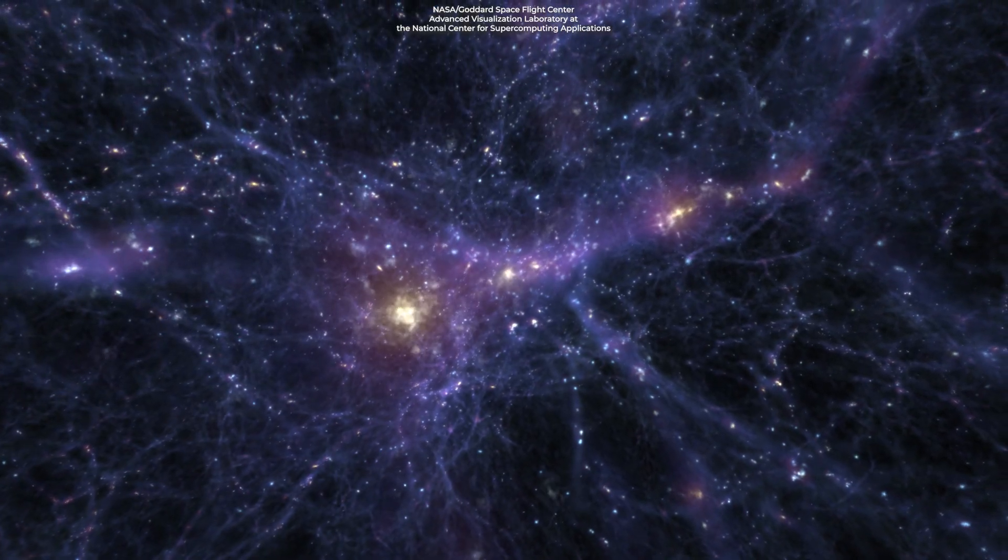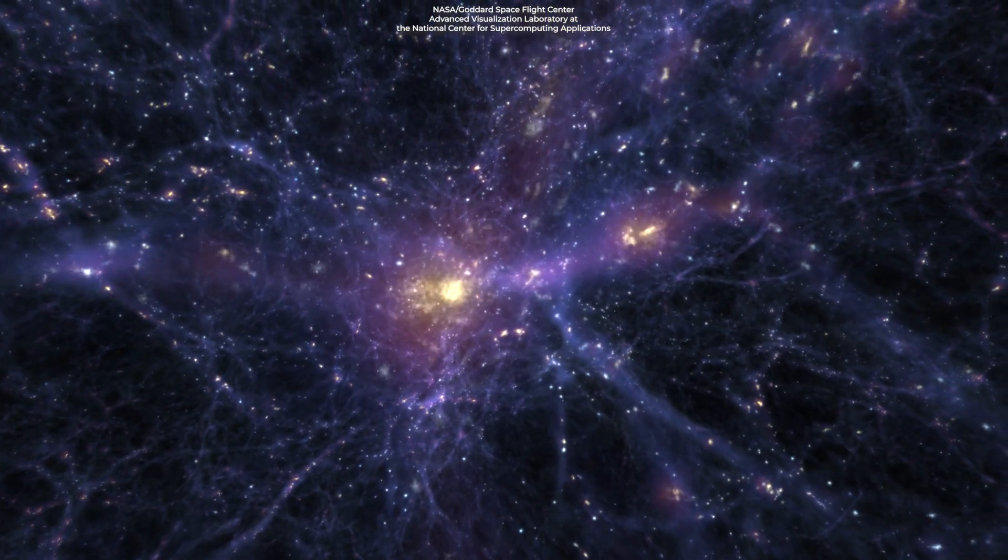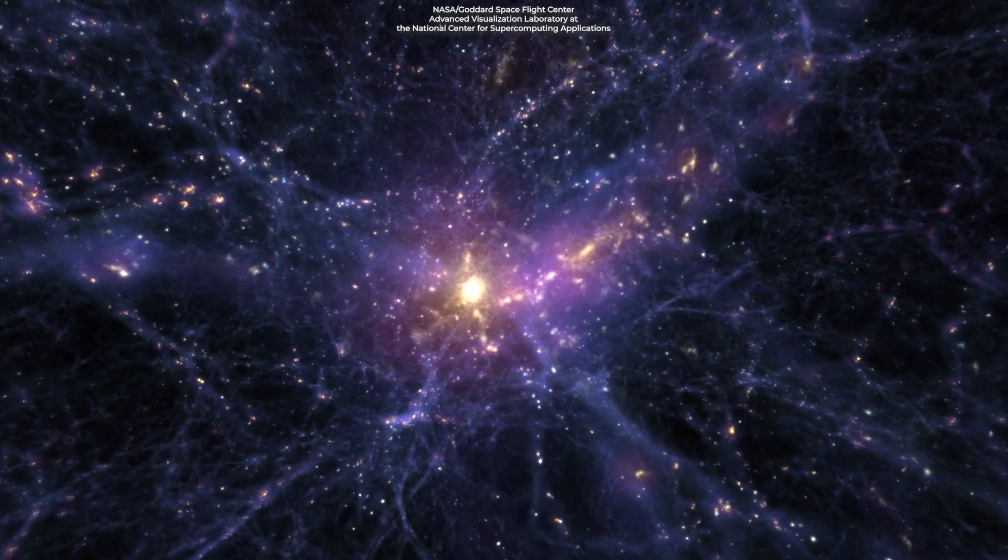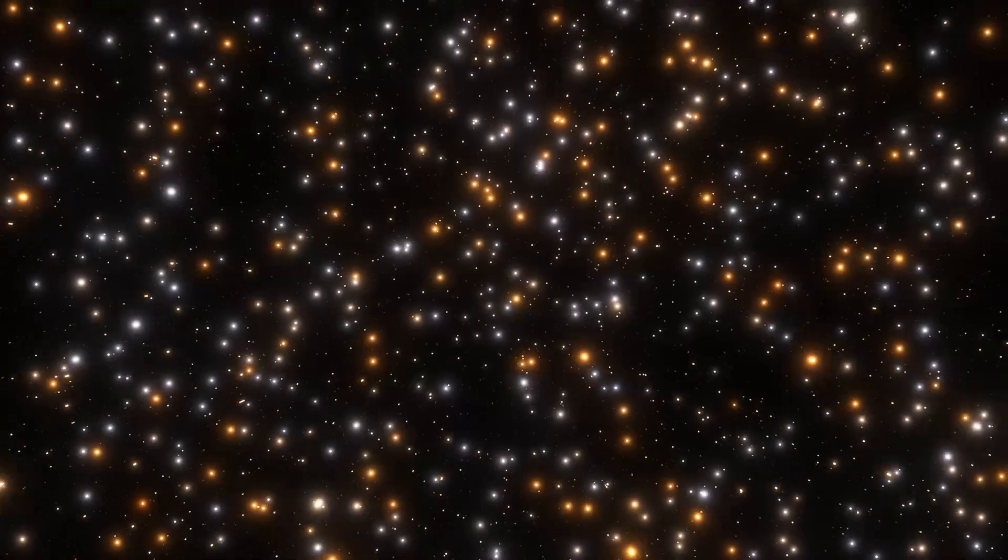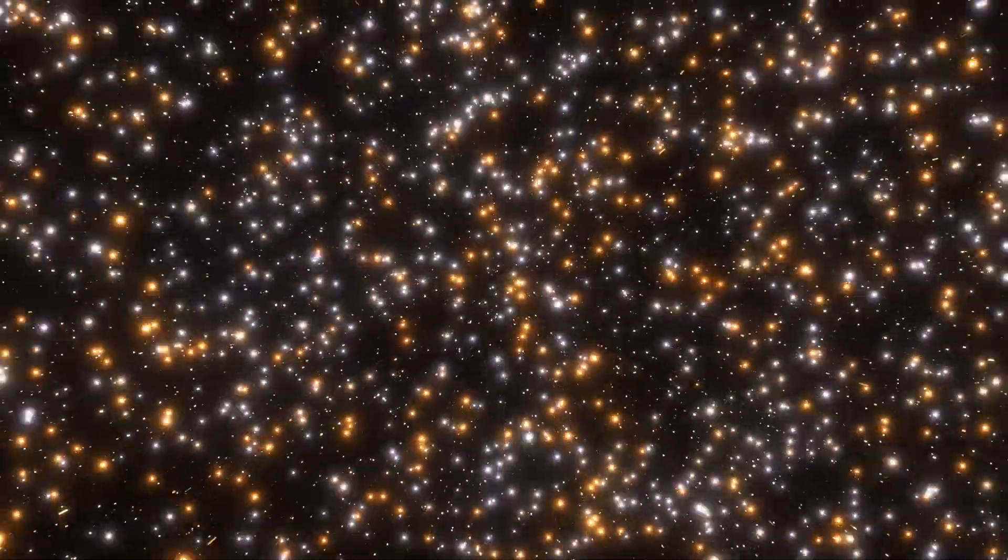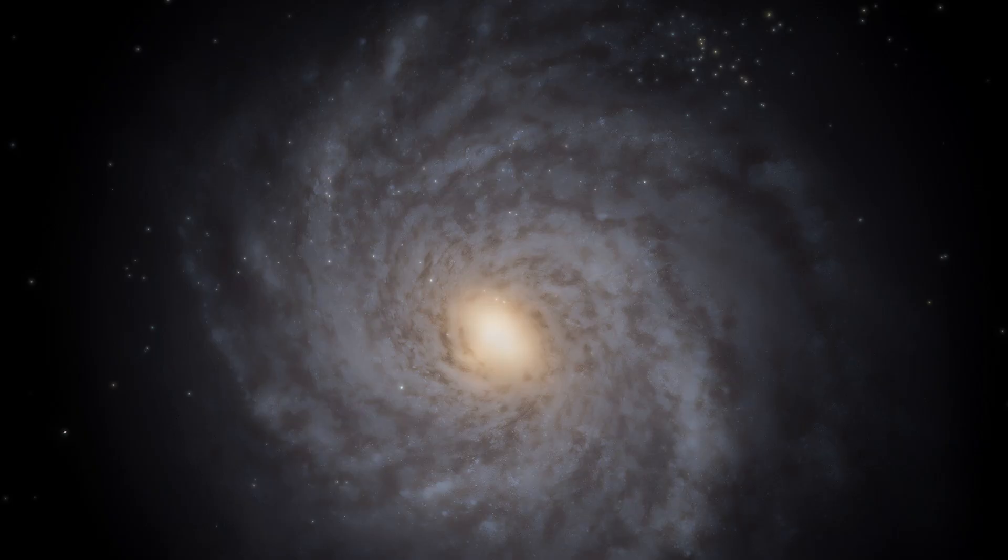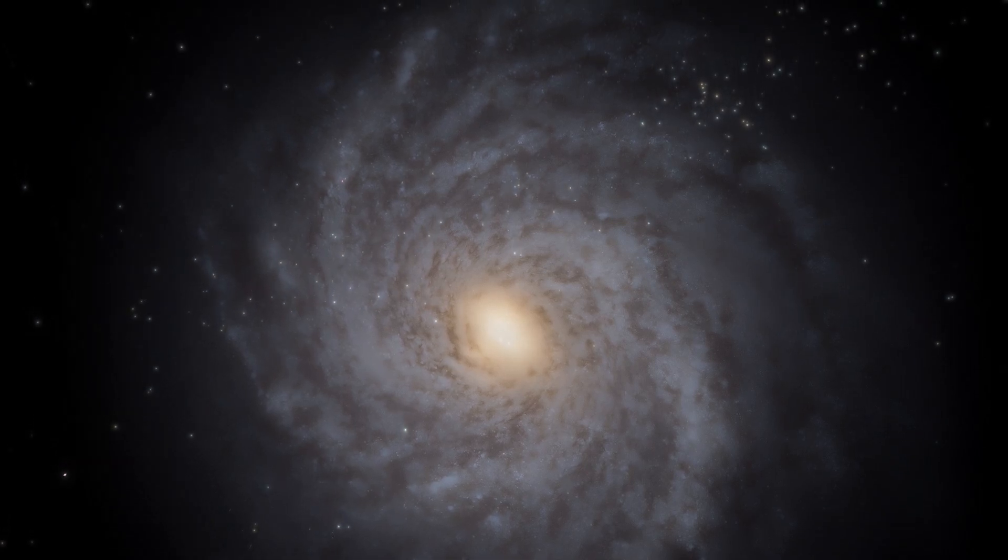Current theories based on how gravity formed structure in a universe dominated by dark matter suggests that small objects, like stars and star clusters, likely formed first and then later grew into dwarf galaxies and then larger galaxies like the Milky Way.